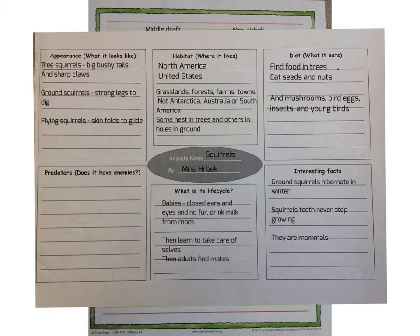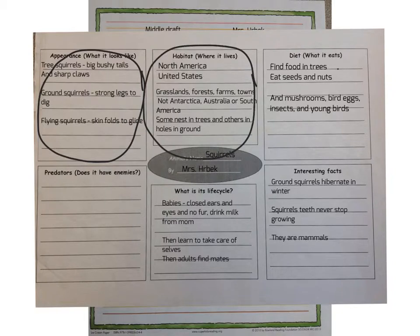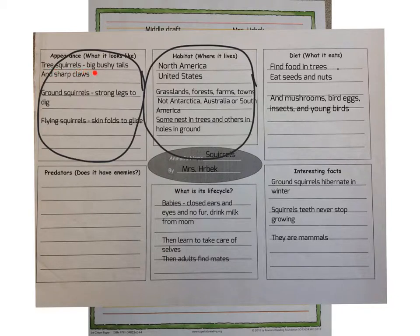I'm going to decide to write about their appearance, or what they look like, so I'll circle that so I know I'm going to focus on those facts. I'm going to re-read what my facts are. For the appearance of what they look like, I know tree squirrels have big bushy tails and sharp claws, ground squirrels have strong legs to dig with, and flying squirrels have skin folds to glide. Choose which category you want to start with and re-read your facts.